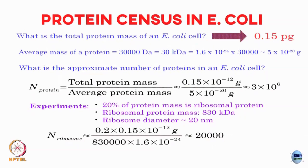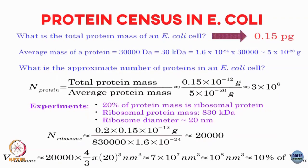That single E. coli cell would contain around 20,000 ribosomes. If you know the diameter of the ribosome, you can also ask what volume fraction of the E. coli cell is occupied by ribosomal proteins. Assuming a sphere, it turns out that 20,000 ribosomes give a ribosomal volume of around 10⁸ nm³ — roughly 10 percent of the E. coli cell — and that is just one single type of protein.